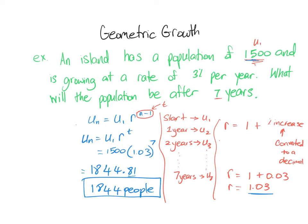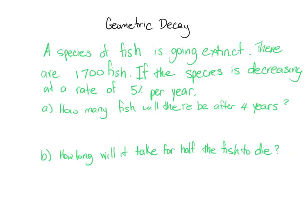Now let's look at an example where something is decaying — going down geometrically. We start with 1700 fish and the species is decreasing at a rate of 5% per year. When we were growing, r was 1 plus the percent growth. Now that we are decreasing, r is 1 minus the percent decrease as a decimal, which means r = 1 − 0.05 = 0.95.